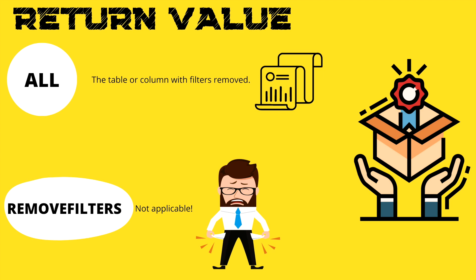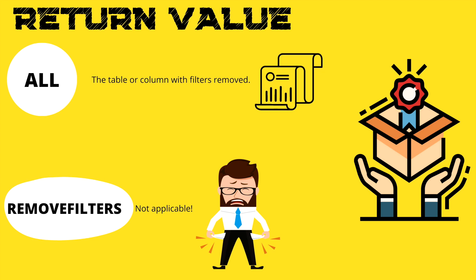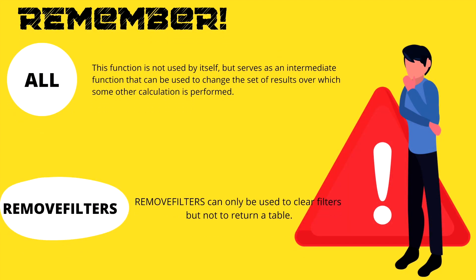Now let's talk about the return value. Whenever we write DAX to create measures, we always expect some value to come out. In the case of ALL, it's going to return the table or column with filters removed. However, in the case of REMOVEFILTERS, you won't get anything back — it's just there to remove the filters from the table or column, but you cannot get a return value.